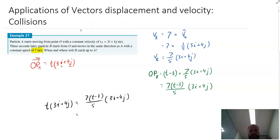You might be a bit freaked out here because suddenly we've got to do simultaneous equations with vectors. But take a look. We've got a vector 3i plus 4j there. We've got a vector 3i plus 4j there. We can cancel them out. And really, we just need to solve the fairly simple equation T equals 7 bracket T minus 3 over 5.